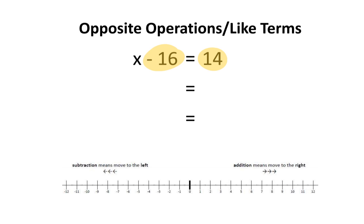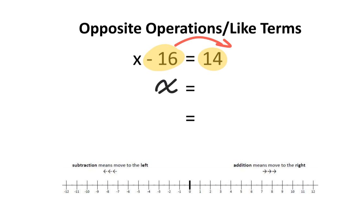Like terms like to be together, which means you can bring the 14 over together with the negative 16, or you can bring the negative 16 over together with the 14. I'm going to bring the negative 16 over to be with the 14. When you bring a term over the equal sign, it actually becomes the opposite. So it no longer is negative 16 — it is now positive 16. We won't be able to do this on a number line, but you can definitely use a calculator. 14 plus 16 is equal to 30.